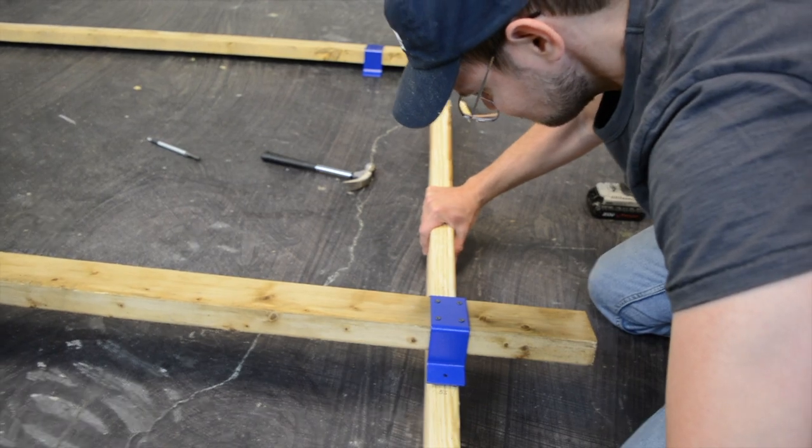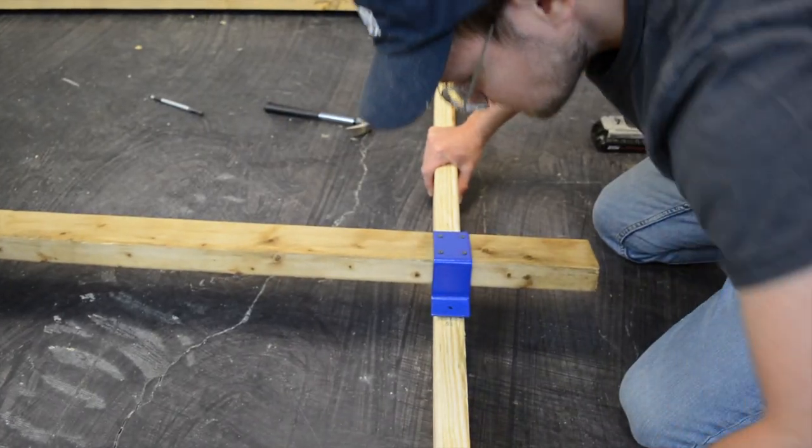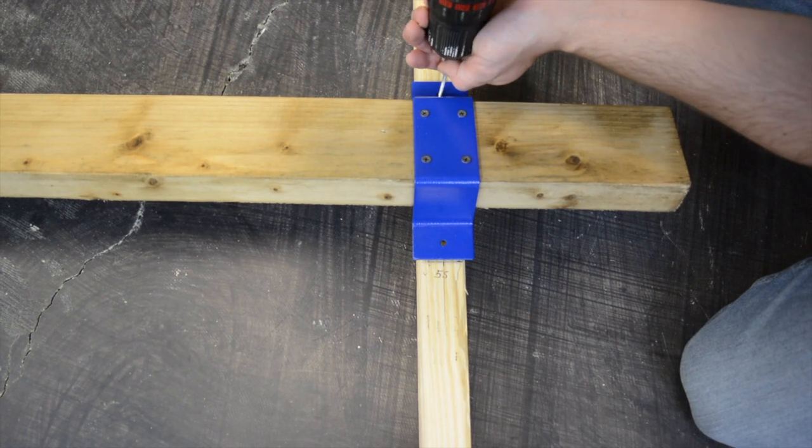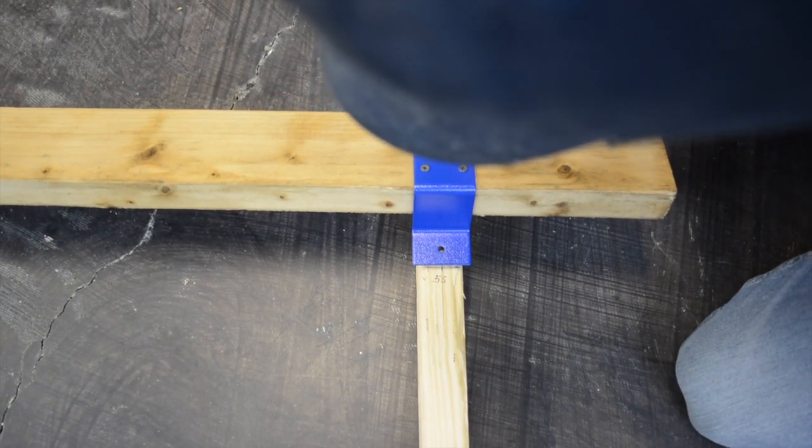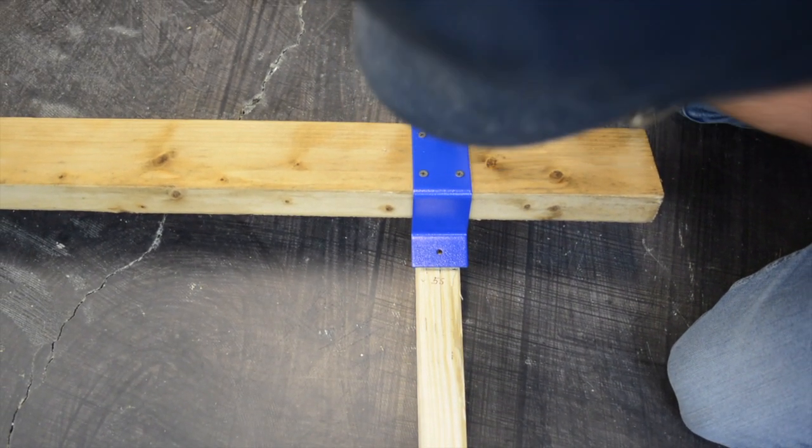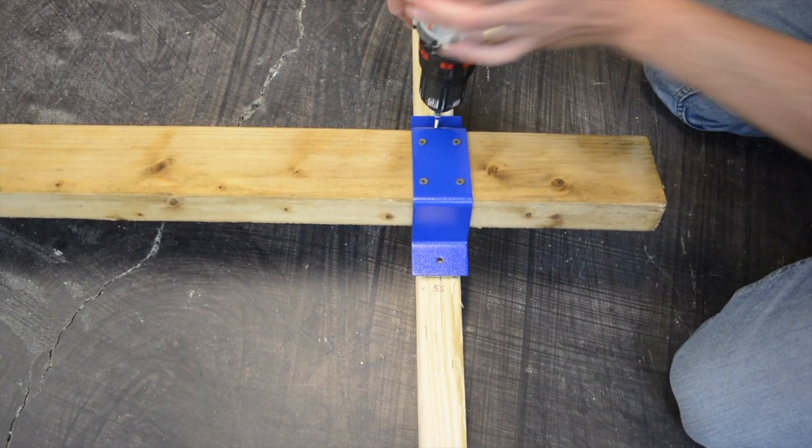Now we're going to put both of those vertical frame legs on the floor with the bottoms on the same side, and we're going to put the bottom beam that we made in the last part across that 55 inch line.